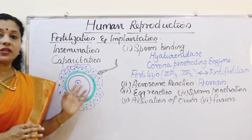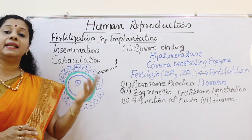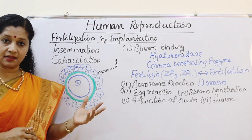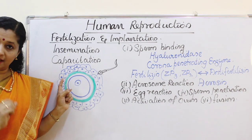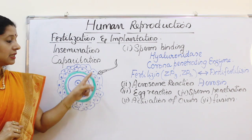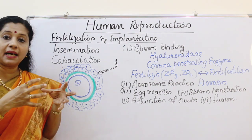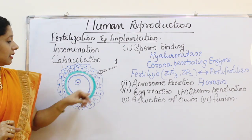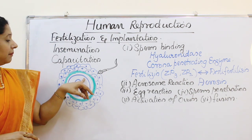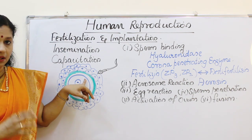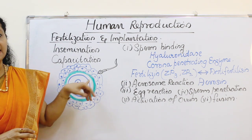Before that, let me briefly describe the structure of the ovum, which we already discussed in the previous video. The outermost layer is called the corona radiata, made up of follicular cells held together by hyaluronic acid. Inner to that is the zona pellucida layer, which is a glycoprotein membrane. Then comes the plasma membrane of the ovum, and in between there is a perivitelline space.